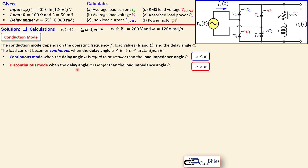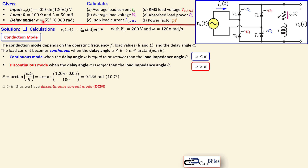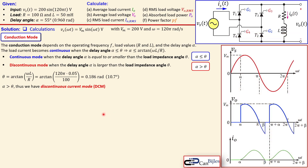Just as in DC-DC converters like the buck or boost converter, we can have discontinuous current mode (DCM) or continuous current mode (CCM), depending on the current flow through the inductor. Calculating the impedance angle θ = arctan(120π × 0.05 / 100) gives approximately 0.186 radians, or 10.7 degrees. Since α (55°) is greater than θ (10.7°), we have discontinuous current mode (DCM).